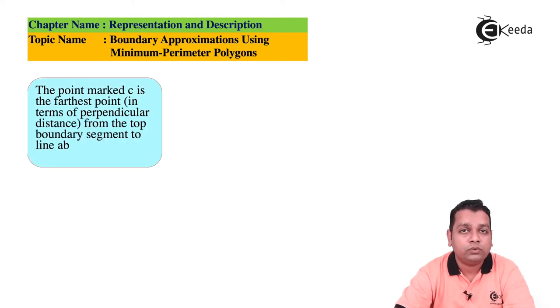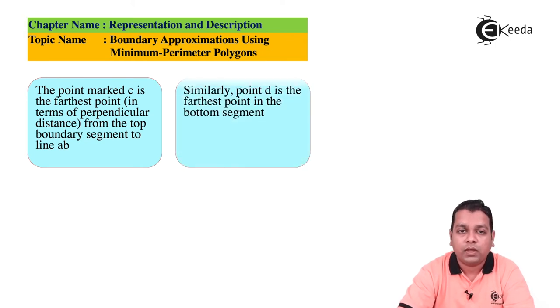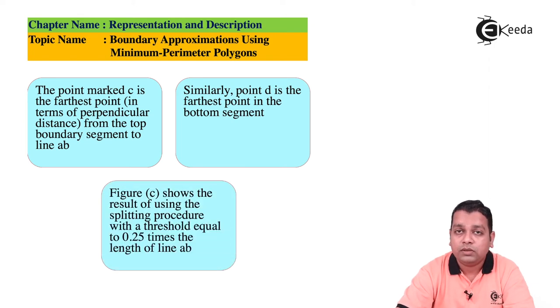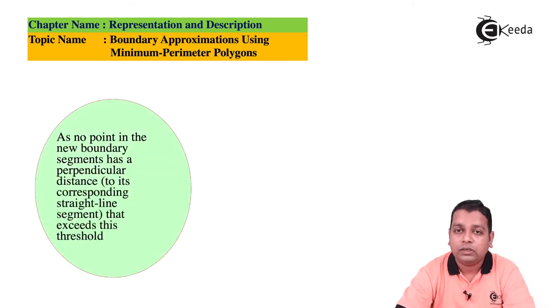The point marked c is the farthest point in perpendicular distance from the top boundary segment to line ab. Similarly, point d is the farthest point at the bottom segment. Figure (c) shows the result of using the splitting procedure with threshold equal to 0.25 times the length of line ab. Since no point in the new boundary segments has perpendicular distance exceeding this threshold, the procedure terminates with the polygon shown in Figure (d).